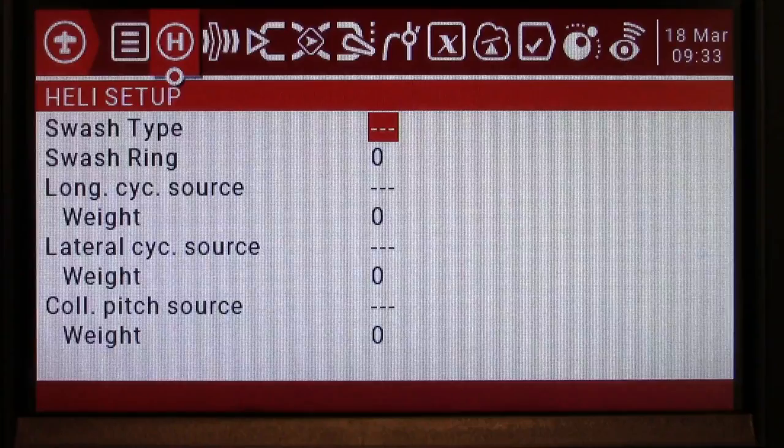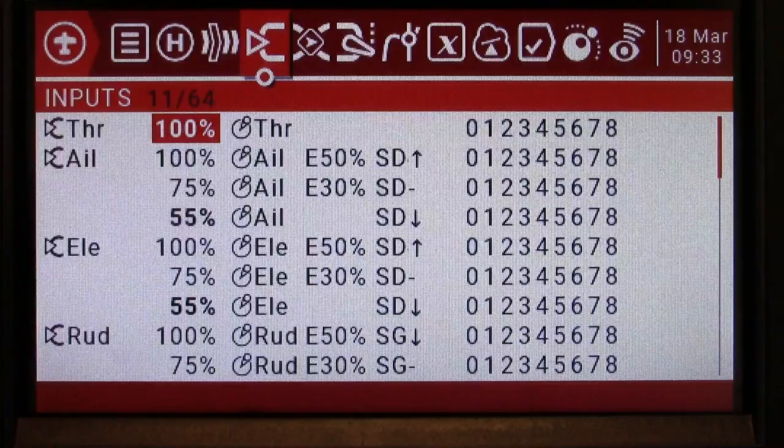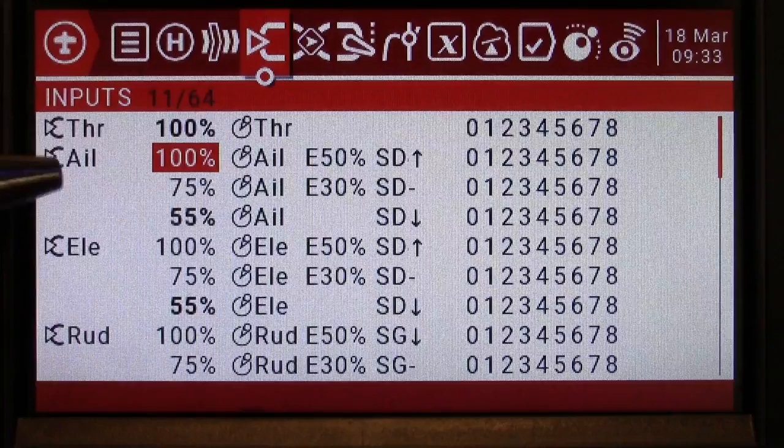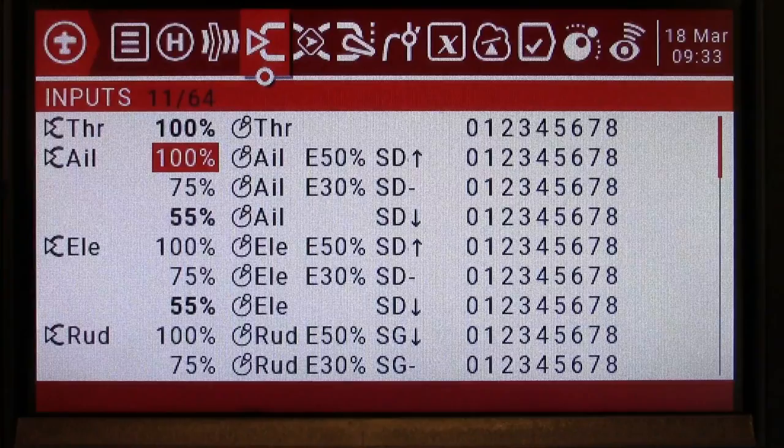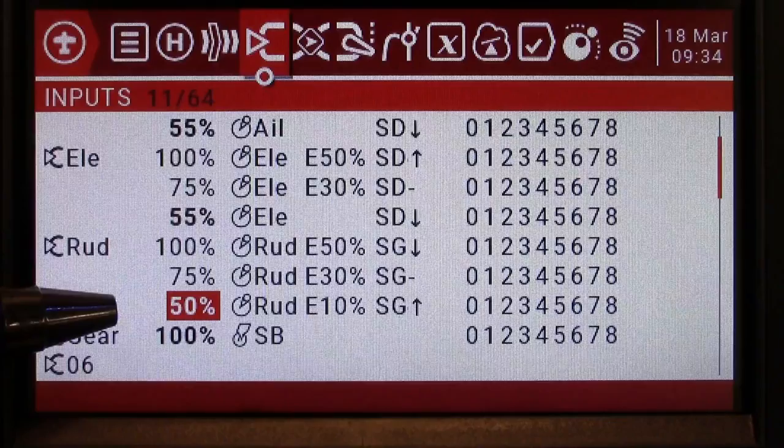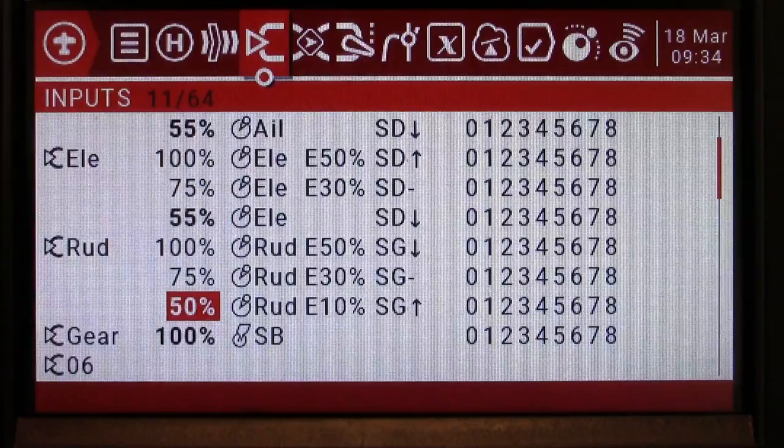Now for helicopter setup, of course, we're not using any type of swash mixing. This is all the swash mixing is done within the FBL system, the fly barless unit. So you don't worry about swash mixing at all. This is my input. This is where I set my dual and exponential rates for my aileron elevator and rudder. I've got a hundred percent when dual rates are turned off, of course, but using quite a bit of positive expo plus 50. My mid dual rate 75, plus 30 percent exponential. And my low dual rate for tame flight 55 percent on aileron. Exactly the same for elevator and rudder. Basically the same except for the low 50 percent value of dual rate to keep the tail rotor just a little bit more manageable. And using a little bit of positive expo of plus 10 percent.